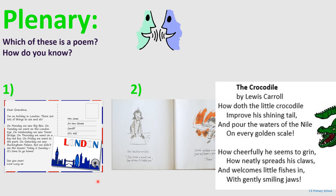Here is your answer. Well done if you selected number three — that is our poem. At the top I have writing in bold letters: 'The Crocodile' — that is the title. I can also see two groups of lines, so there's a stanza here and another stanza here. I can also see some rhyming words: crocodile and Nile, tail and scale. So by identifying a few of our poetry features, I can see that this is clearly a poem.